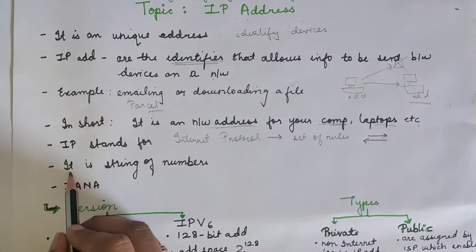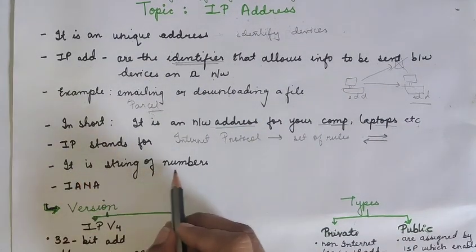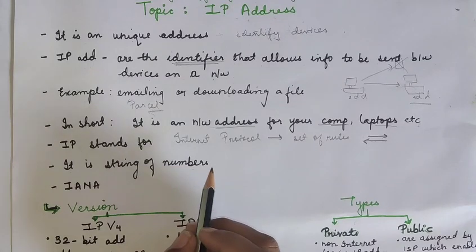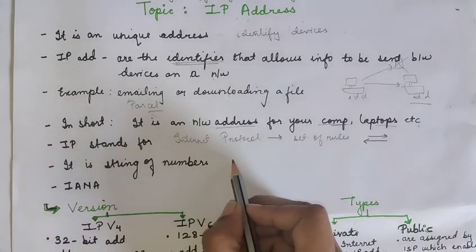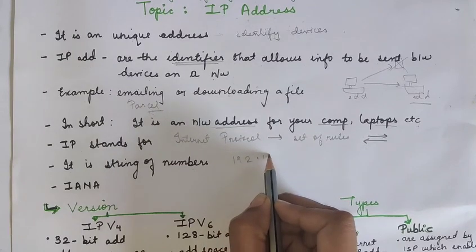Now, what is how this IP address looks like? It is a string of numbers in a particular format or you can say in a certain format like for example in this way.